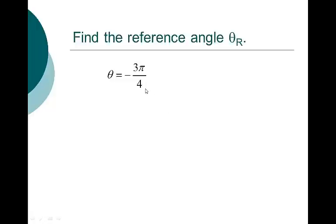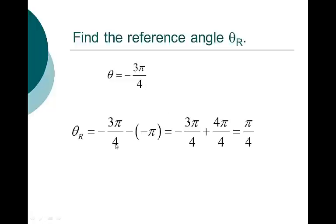How about negative 3 pi over 4? We're going negative from 0, so we end up in quadrant 3. Officially: negative 3 pi over 4 minus negative pi gives us negative 3 pi over 4 plus 4 pi over 4, and we end up with pi over 4. If I know the sine, cosine, and tangent of pi over 4, then I know the sine, cosine, and tangent of negative 3 pi over 4.